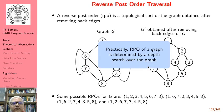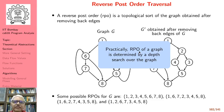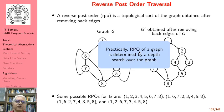A reverse post order of a graph is a topological sort of the graph obtained after removing the back edges. We identify the back edges, remove them, and do a topological sort. Practically, the reverse post order of a graph is determined by a depth first search over the graph — a single procedure depth first search gives us everything. An edge going from a node to another node whose depth first order is smaller becomes a back edge.